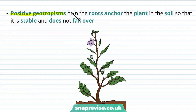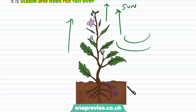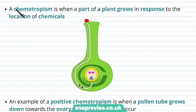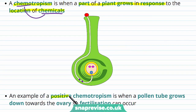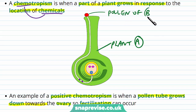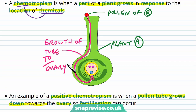Positive geotropism helps roots anchor the plant into the soil so it is stable and doesn't fall over, withstanding wind and rain. Chemotropism is when part of a plant grows in response to the location of chemicals — for example positive chemotropism where the pollen tube from a pollen grain grows towards the ovary, following chemicals to deliver genetic material for fertilisation.